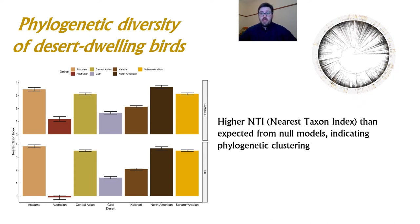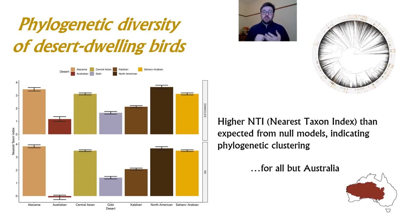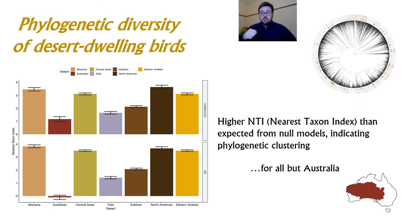We compared the phylogenetic diversity of desert dwelling birds to what is expected based on our null communities. We find that generally in most deserts, desert species have a higher nearest taxon index than expected from null models, which is a measure indicating phylogenetic clustering. This suggests some sort of habitat filtering in deserts, because species in deserts are more closely related than expected by chance. This holds for most deserts, but not so much for Australia. We do find some phylogenetic clustering in Australia but deeper in the tree, not at the tips. Australia is also unusual in being the youngest of the different deserts of the world, and its deserts make up most of the region, which might suggest that the dynamics of desert colonization in Australia were different than the rest of the world.